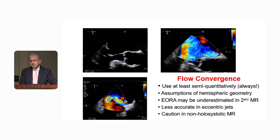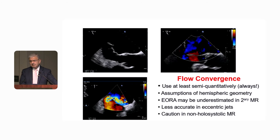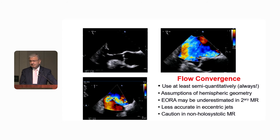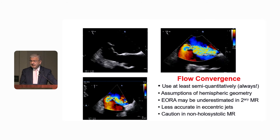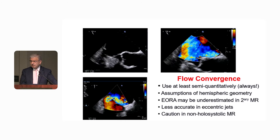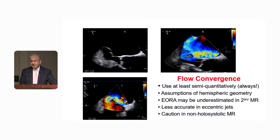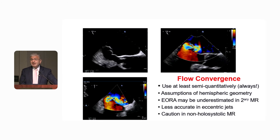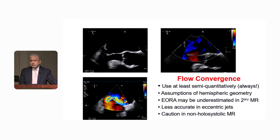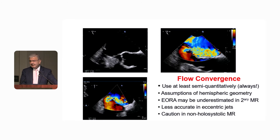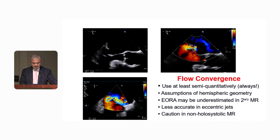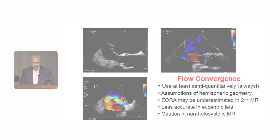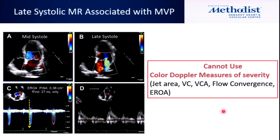Always use PISA semi-quantitatively because it helps, but it has issues — there's no question about it. You may not be able to measure exact numbers through it at times with very eccentric jets or if you have multiple jets. But keep that in mind.